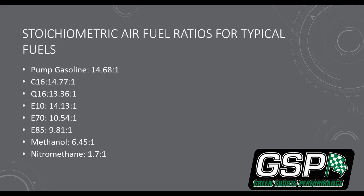Let's look at some typical air-fuel ratios you'll run into in the wild. Pump gas is obviously the most common. The stoic value for straight pump gas isn't something you'll find much anymore in the US because everything has ethanol in it — they put as much ethanol in as they can to dilute the fuel because it's cheaper. You'll notice E10 comes in at 14.13, and the question is why it's not 14.68 like pure pump gas — that's the ethanol content lowering it.